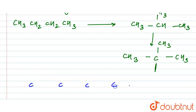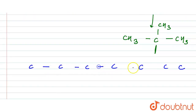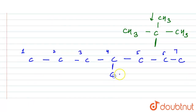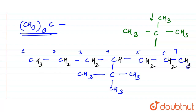Now let's draw the structure. We number seven carbons: 1, 2, 3, 4, 5, 6, and 7, all connected by single bonds. At the fourth carbon, we attach the tertiary butyl group — C with three CH₃ groups. Completing the carbon valencies (four bonds each), the full structure is: CH₃CH₂CH₂CH(with tert-butyl)CH₂CH₂CH₃.